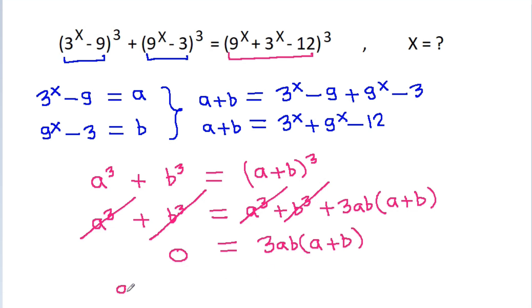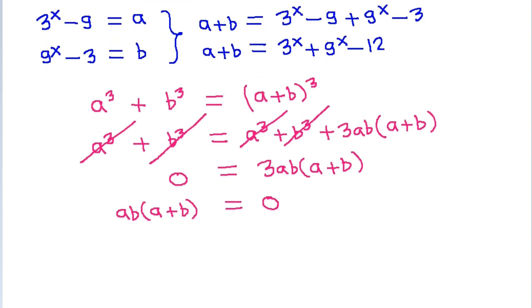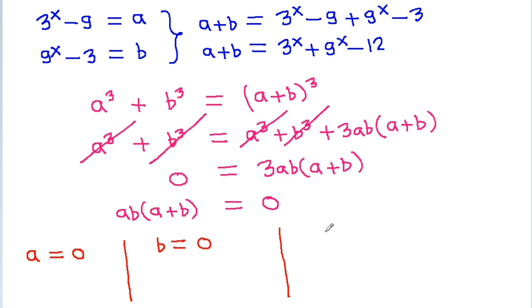So, a times b times a plus b is equal to 0. That means either a can be 0, b can be 0, or a plus b can be 0.